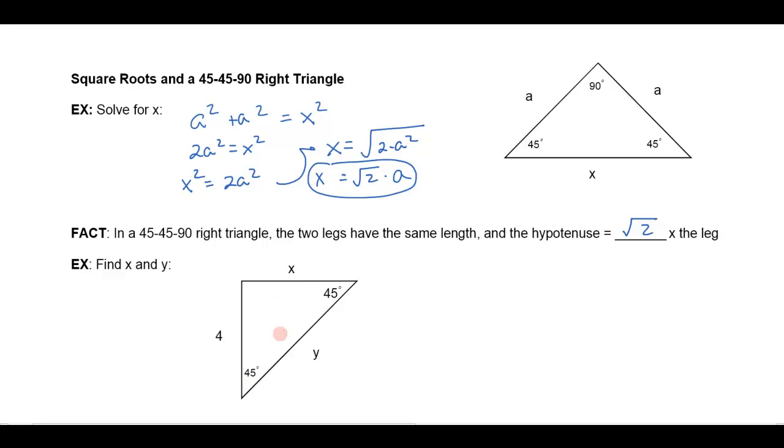So for example, down here, if I know this is a 45-45-90 right triangle, if this is 45 and this is 45, the sum of all of them have to add up to 180, so that makes this a right triangle. Then I automatically know that this side x has to be exactly the same as this leg over here, which is 4, and then the hypotenuse is automatically going to be 4 times the square root of 2. And it's that fast and that simple.